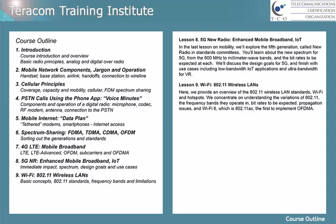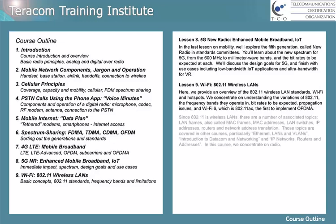Lesson nine is Wi-Fi, 802.11 wireless LANs. Here we provide an overview of the 802.11 wireless LAN standards, Wi-Fi, and hotspots. We concentrate on understanding the variations of 802.11, the frequency bands they operate in, the bit rates to be expected, propagation issues, and Wi-Fi 6, which is 802.11ax, the first to implement OFDMA. Since 802.11 is wireless LANs, there are a number of associated topics: LAN frames (also called MAC frames), MAC addresses, LAN switches (also called Ethernet switches), IP addresses, routers, and network address translation. These topics are covered in other courses. In this course, we concentrate on radio.